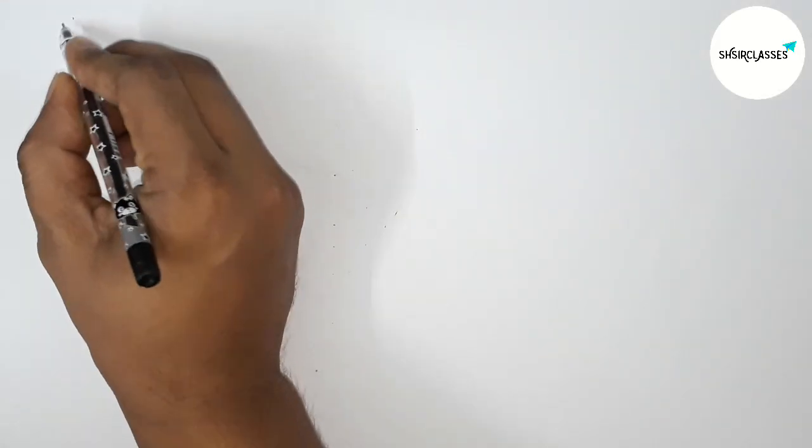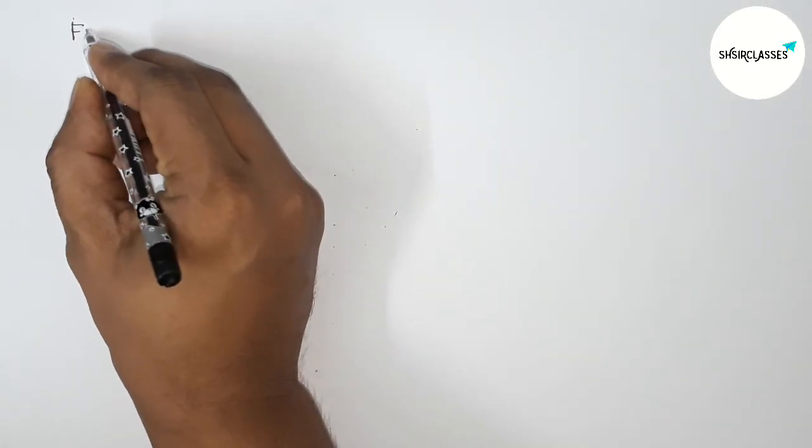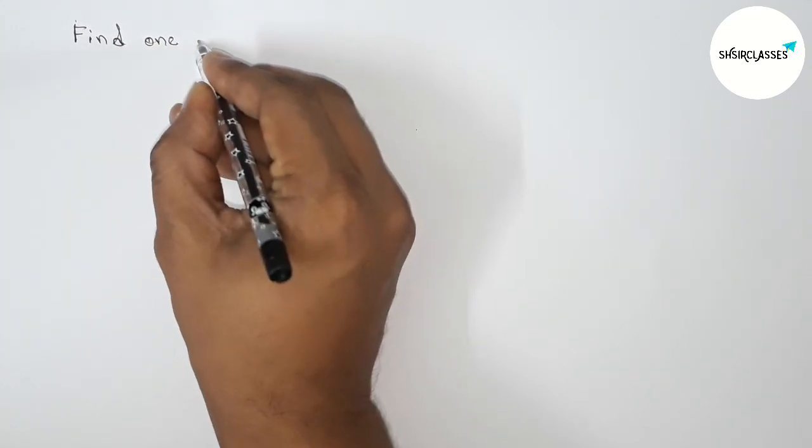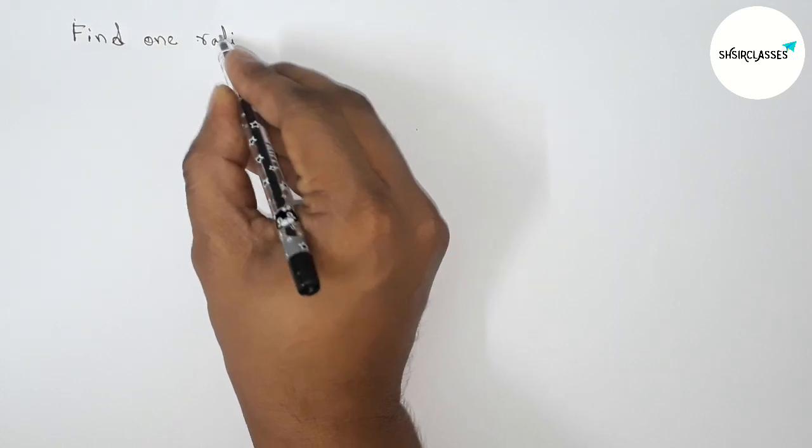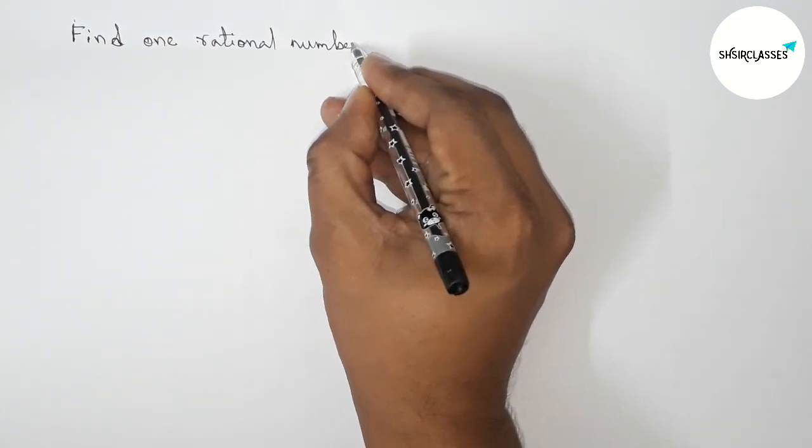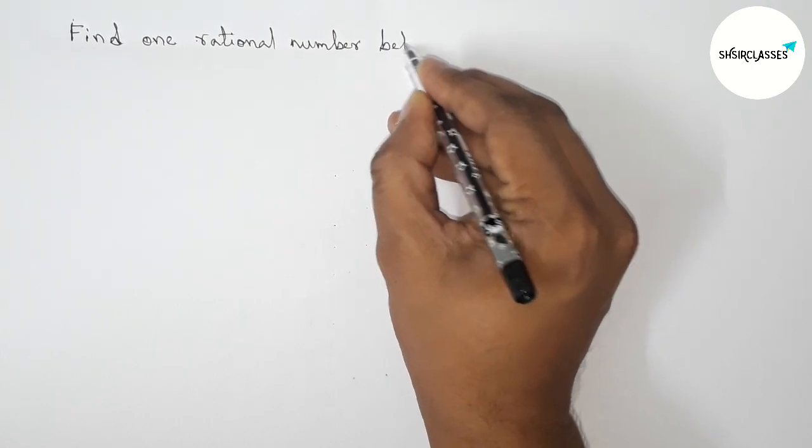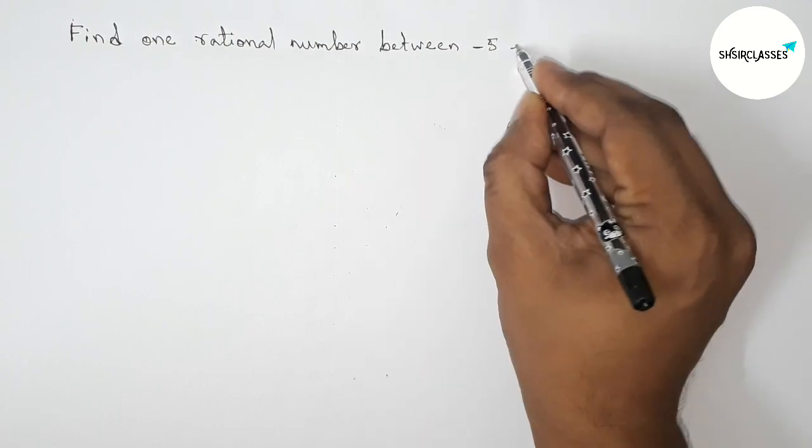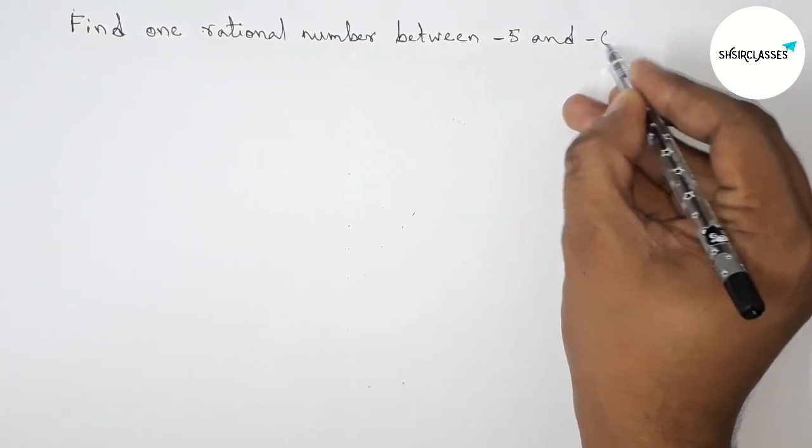Hi everyone, welcome to SI Share Classes. Today in this video we have to find one rational number between minus 5 and minus 6 in an easy way. So please watch the video till the end. So let's start the video.